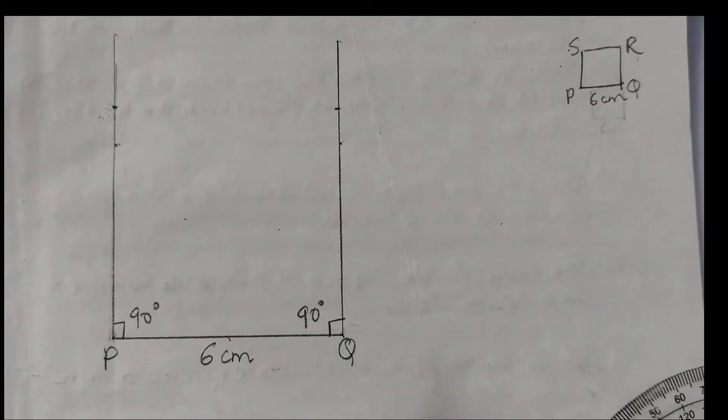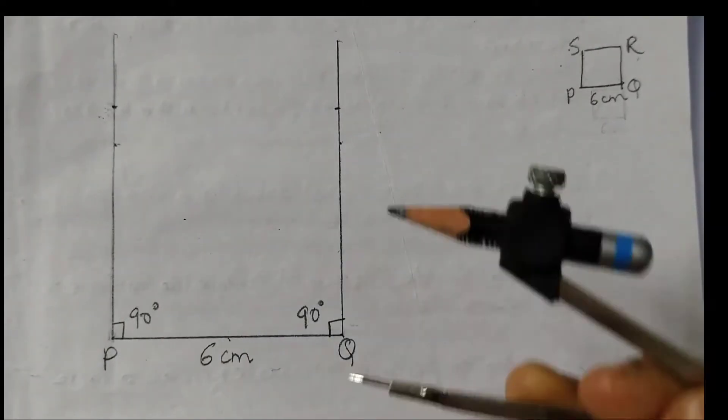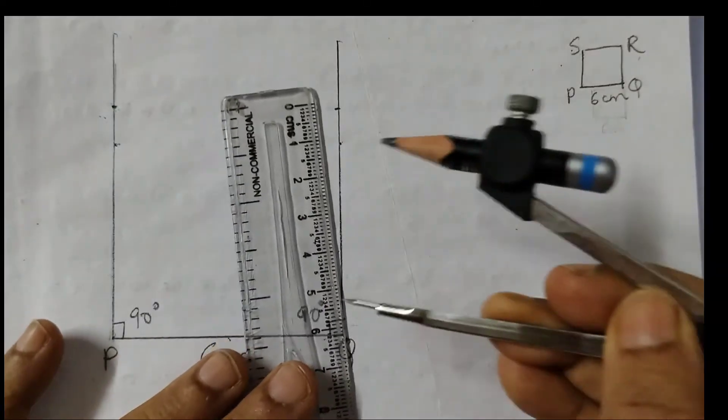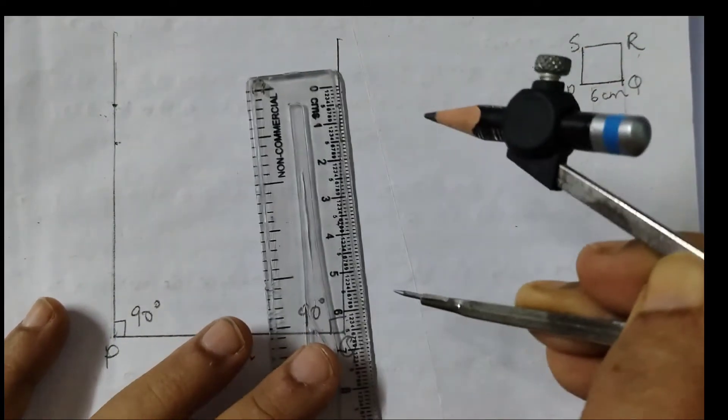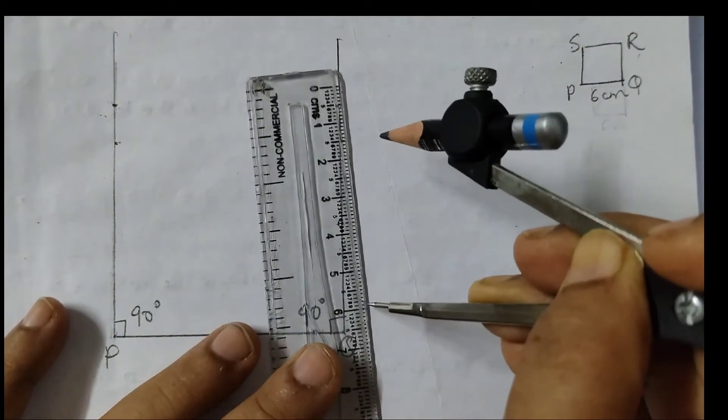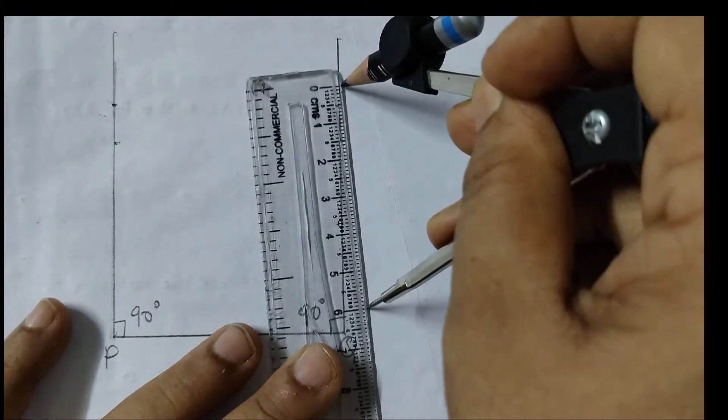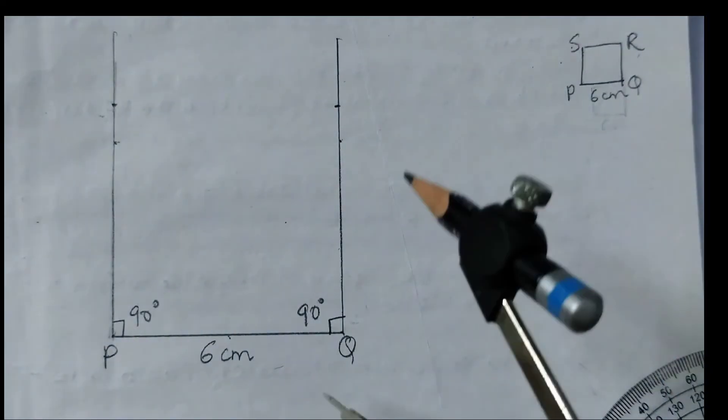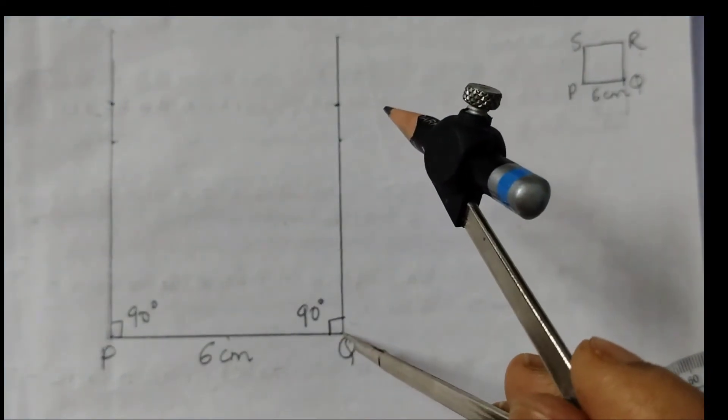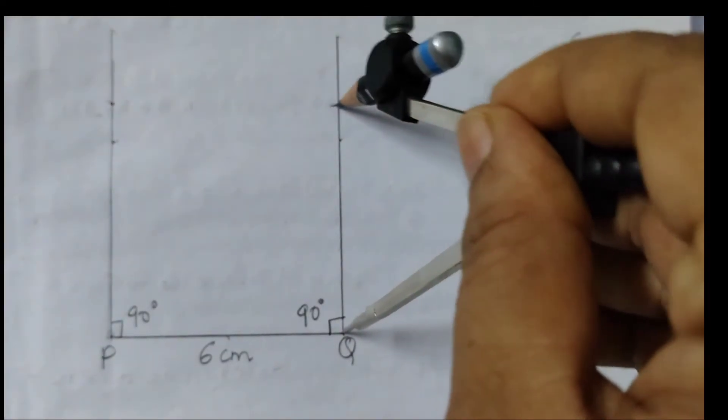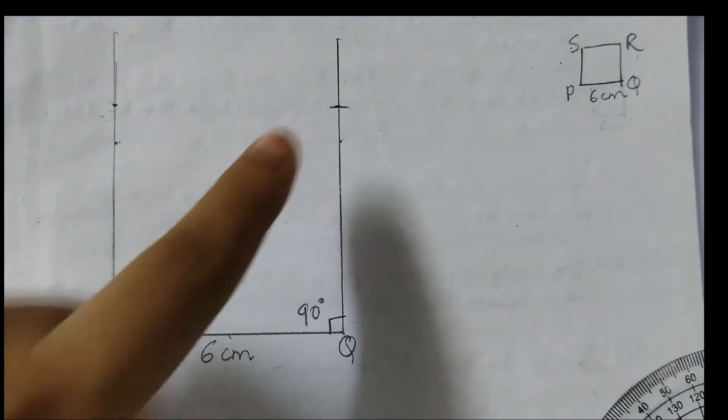The second way is using the compass. So what you can do is you can measure 6 cm. I will take the measurement 6 cm that is from here till 0 like this. You can take the measurement and you place the point here and then cut an arc. Do you see? It is the same point here.